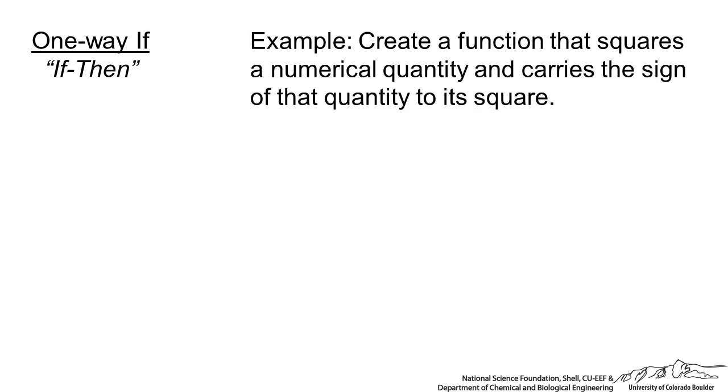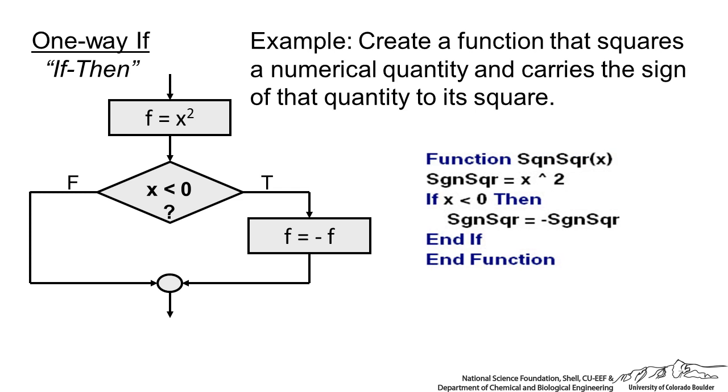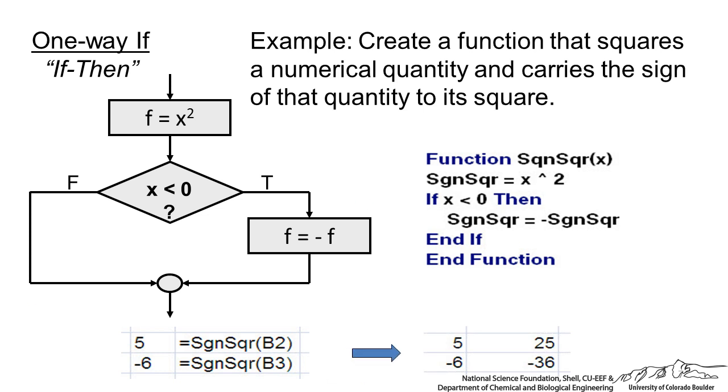Let us create a function that squares a numerical quantity and carries the sign of that quantity to its square. We ask the user for an X, then we compute the function which is X squared. If the original X is negative, then we want to take the negative of the result of that square function. If it is not less than 0, then we are not going to do anything. And in VBA, it might look like this function. And if we ran this in Excel with 5 and negative 6, we would get results of 25 and negative 36. So if it is negative, we have carried that negative sign to the result.